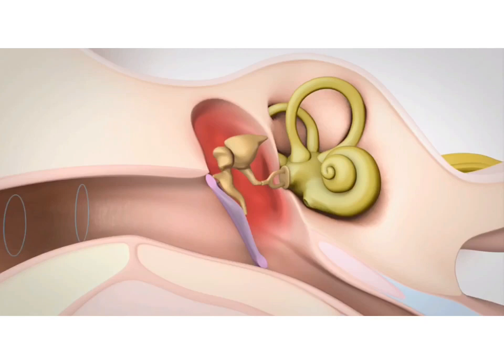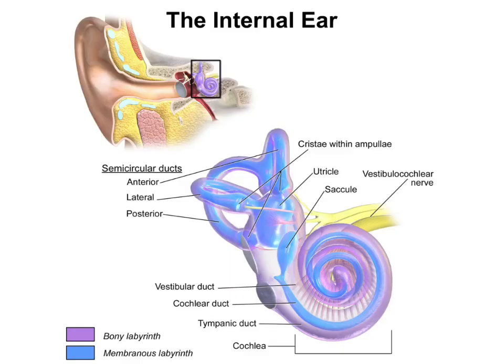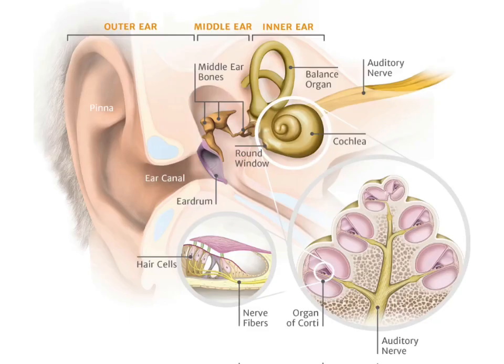The eardrum starts vibrating and passes the vibrations to the three small bones present in the middle ear. From the middle ear, these vibrations are passed to the internal ear, that is, to the cochlea. The cochlea starts vibrating, and these vibrations are converted into electrical impulses carried by the auditory nerve to the brain, which then interprets the sound.